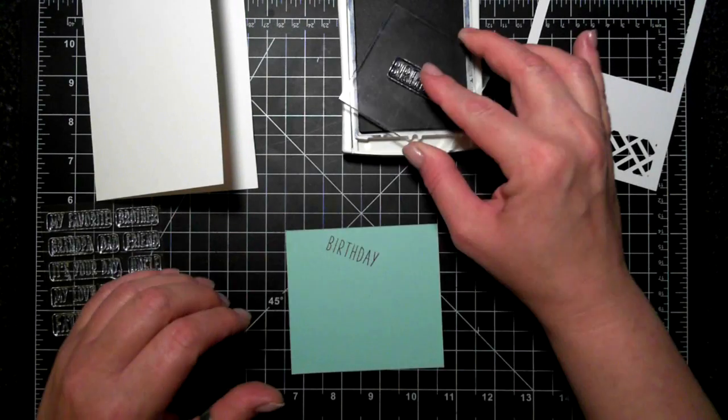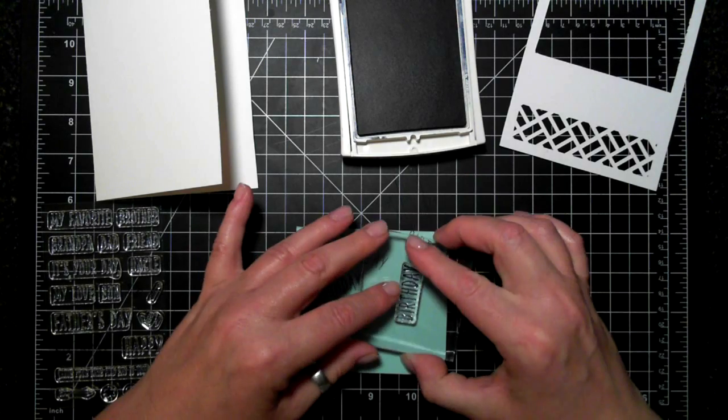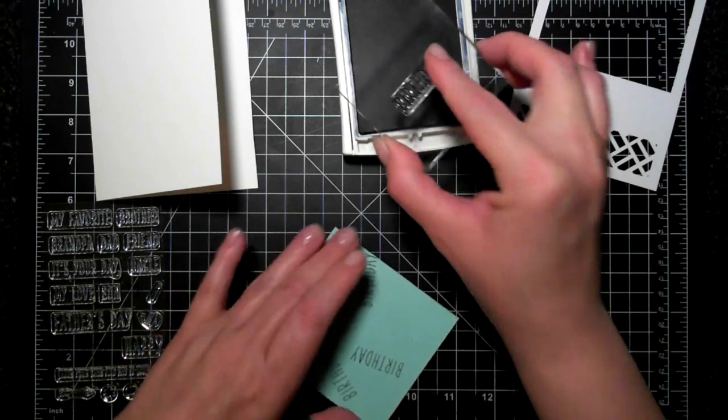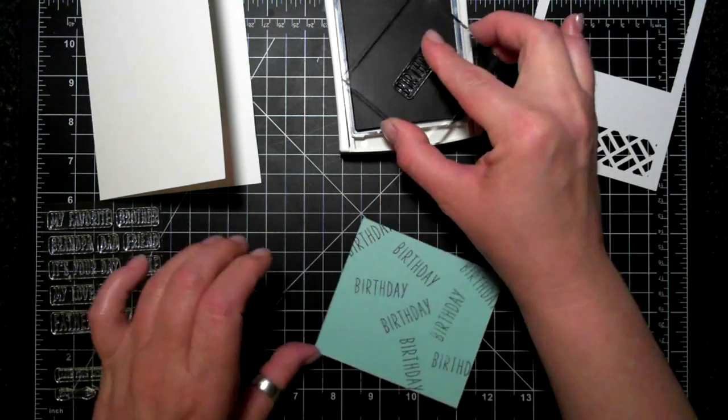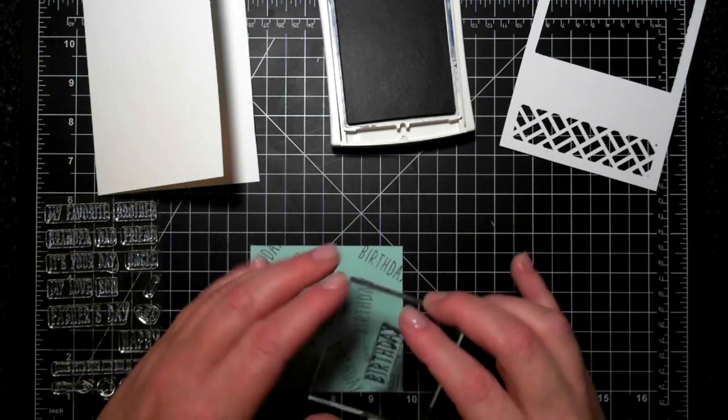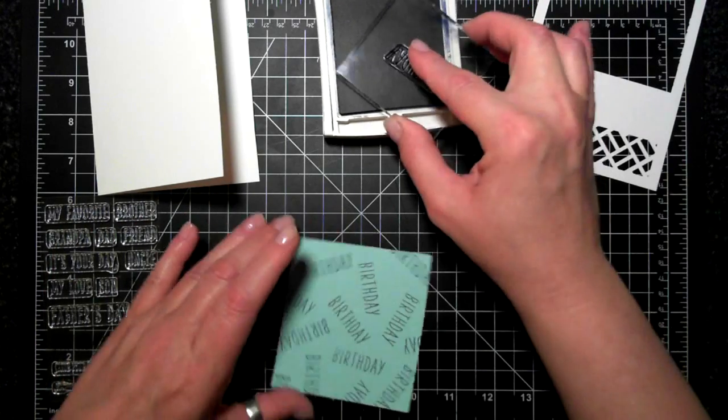I'm taking a piece of I think this was Lost Lagoon, might have been Soft Sky. I think it's Soft Sky, or it could be Pool Party. I'm not sure. I'm using the birthday stamp with the Night of Navy ink because it went really well, and I'm randomly stamping on this little square. This is slightly bigger than the opening that I cut out.